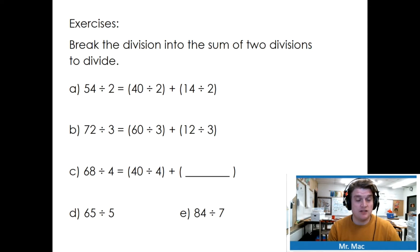Break the division into the sum of two divisions to divide. So 54 divided by 2 is the same as 40 divided by 2 plus 14 divided by 2. We can do this because 54 is 40 plus 14. Do you see that? And we can find this rather easily. Half of 40 is 20. Half of 14 may be a little more difficult, but I know 7 plus 7 is 14. And we're going to find the quotient, which is 27.